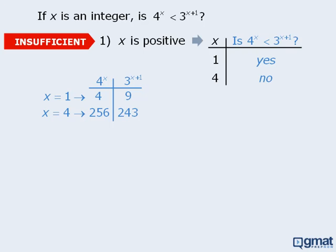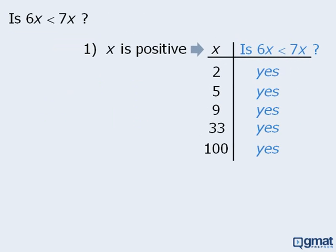However, if the statement you are examining is sufficient, as is the case with this example, the table method will be inconclusive. For example, the table results here suggest that if x is positive, then 6x will always be less than 7x. But it may very well be the case that we have simply chosen bad numbers to work with.